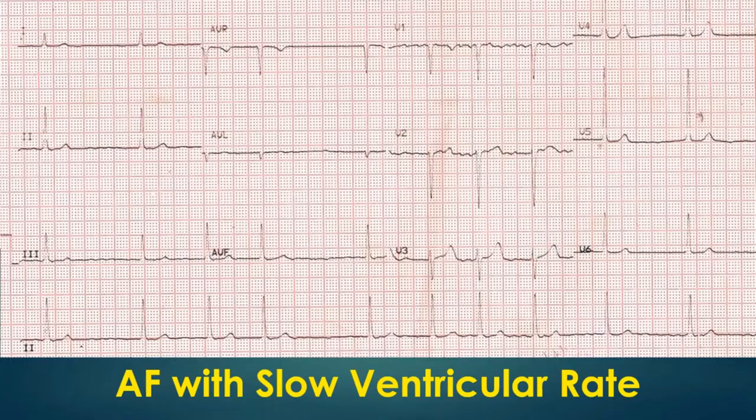Atrial fibrillation with slow ventricular rate. In this ECG, fine fibrillary waves are seen throughout the baseline indicating fine atrial fibrillation. When the fibrillary waves are more than 1 mm in amplitude, they can be considered as coarse atrial fibrillation.